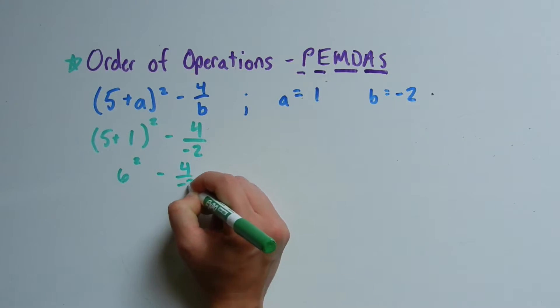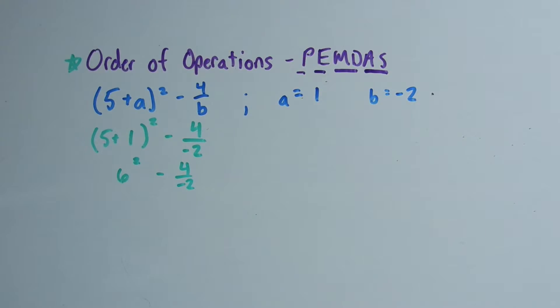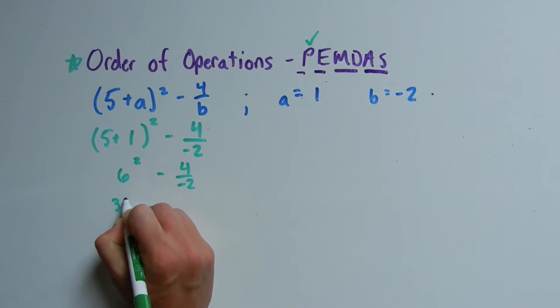Next we're going to evaluate the exponents. There's one exponent in this problem which is the 2, so we're going to evaluate 6 squared. 6 squared is 36.